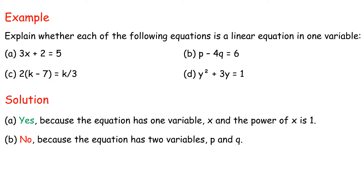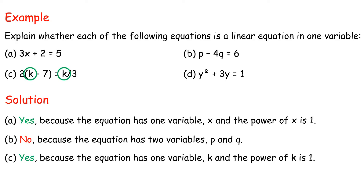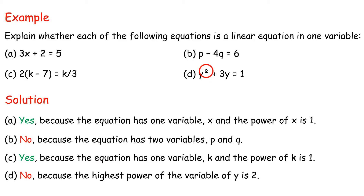(c) 2(k - 7) = k/3. Yes, because the equation has one variable, k, and the power of k is 1. (d) y² + 3y = 1. No, because the highest power of the variable y is 2.